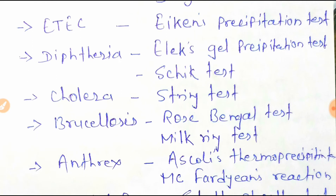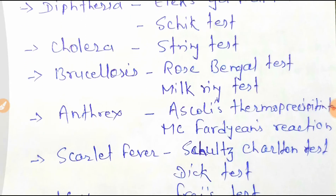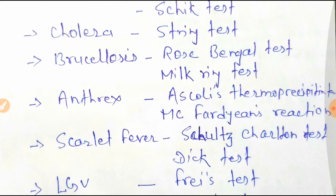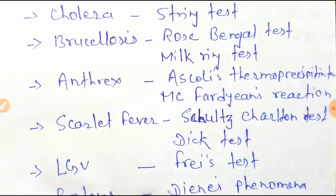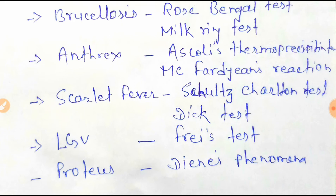For cholera, it is the string test. Next one is brucellosis — brucellosis uses the Rose Bengal test and milk ring test. Next, after that, anthrax uses Ascoli's thermoprecipitin test and McFadyean reaction. Scarlet fever uses the Schultz-Charlton test and Dick test.